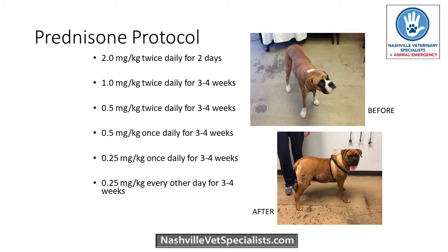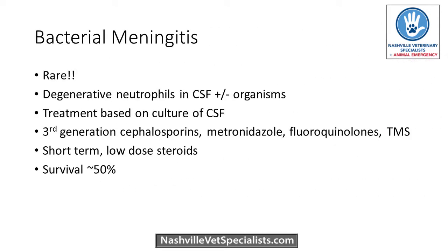The typical treatment protocol is steroids alone — usually prednisone — and most of these dogs can go into complete remission and come off drugs. If they relapse, I might add another immunosuppressant. For bacterial meningitis, the treatment is very different: neutrophils may be degenerative with organisms visible. Ideal treatment is culture-based, but recommended empiric options include third-generation cephalosporins, metronidazole, and TMS, along with a very short course of steroids — about three to four days. Survival for bacterial meningitis is much worse than for steroid-responsive meningitis.